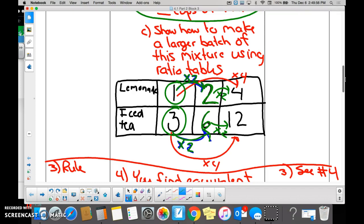If you wanted to make even more, you would simply, in this case, quadruple it. Multiply your one cup by four, and multiply your three cups of iced tea by? Four. Four. Yes, no? Yes.